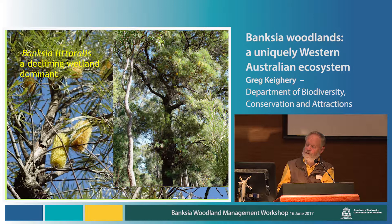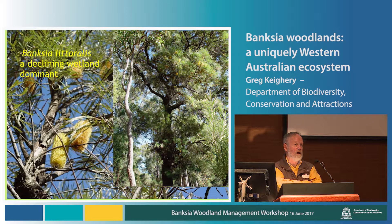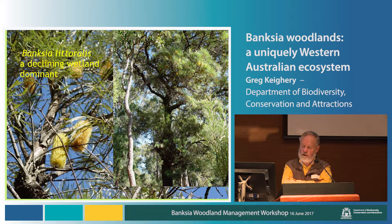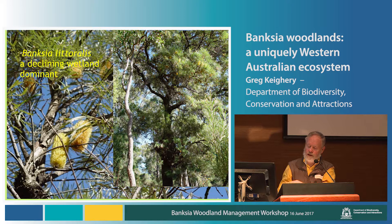Banksia littoralis has been mapped a lot but generally comes out in floristic community types as a swamp form — one of the Melaleuca communities. It almost always co-occurs with Melaleucas, and although it is a large tree, it is very much a declining species, as is Banksia ilicifolia, much of its range affected by the drying climate and more frequent fires. You rarely get very large Banksia littoralis anymore, and Phytophthora is certainly making a major impact. Though it's a tree, it really isn't a Banksia woodland because floristically it comes out as something completely different.